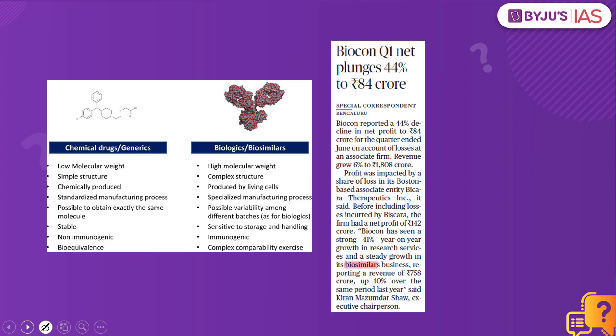Why have we taken this practice question? Because this article makes a mention of biosimilars. Before we understand what biosimilars are, we have to understand what biologic drugs are. These are medicines — biological products which are made from living organisms. The biologics include a variety of products that can be extracted from living organisms, and they are a cure to a variety of diseases like chronic kidney disease and diabetes. These are drugs extracted from living organisms through a highly complex manufacturing process.